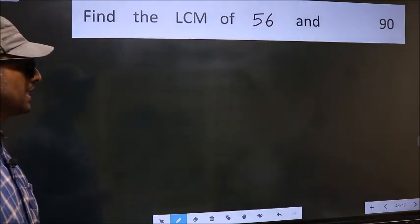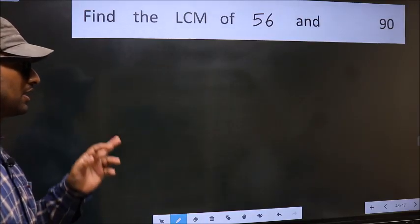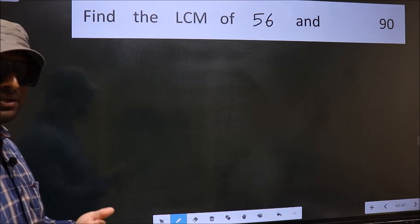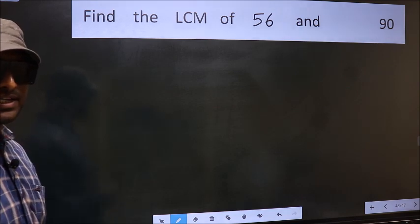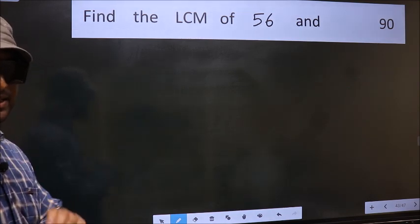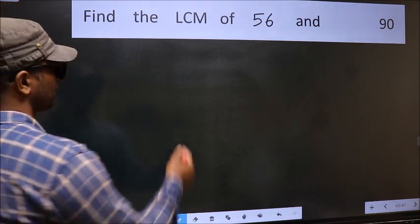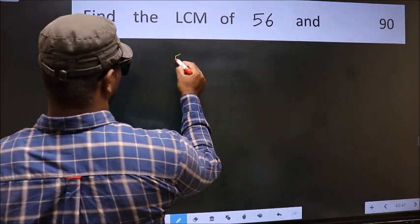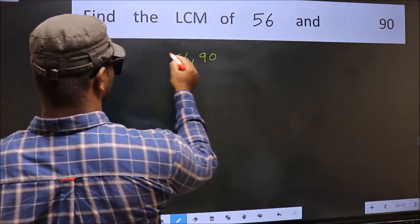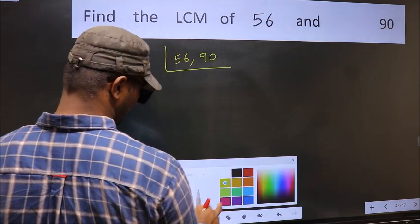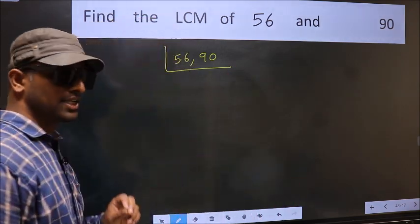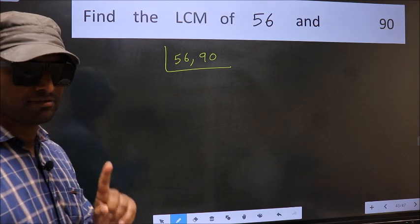Find the LCM of 56 and 90. To find the LCM, first we should frame it in this way: 56 and 90. This is your step 1.